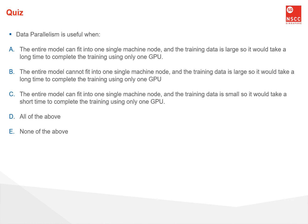Quiz question: Data parallelism is useful when — (a) the entire model can fit into a single node and the training data is large so it would take a long time using only one GPU; (b) the entire model cannot fit into one single machine and the training data is large; (c) the entire model can fit into one single machine and the training data is small; (d) all of the above; or (e) none of the above. Pause and think about the answer before moving on.